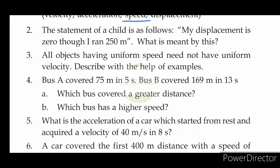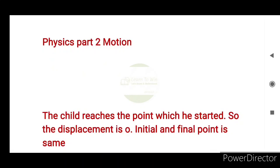This is the statement of a child: 'My displacement is zero, though I ran 250 meters.' What is meant by this? The displacement is zero because the child reaches the point from which he started. The initial point and the final point are the same.